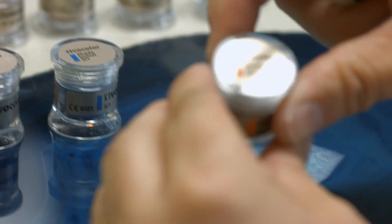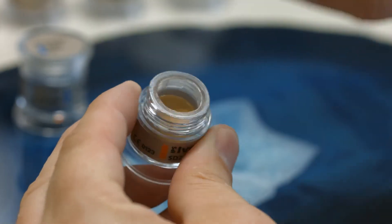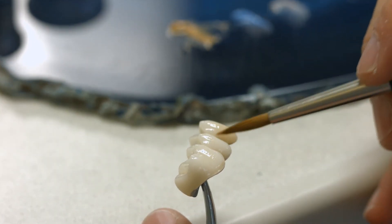Characterize and stain the restoration with IPS Ivocolor shades and IPS Ivocolor Essence powders using the standard layering technique shown in the corresponding IPS style video tutorial.